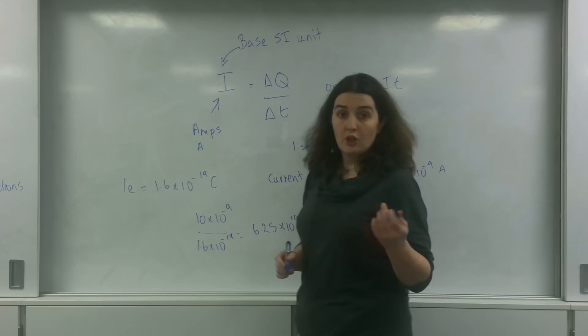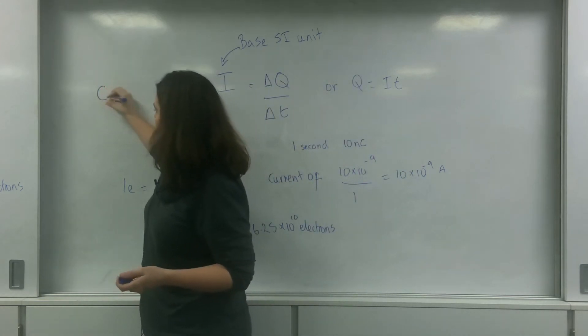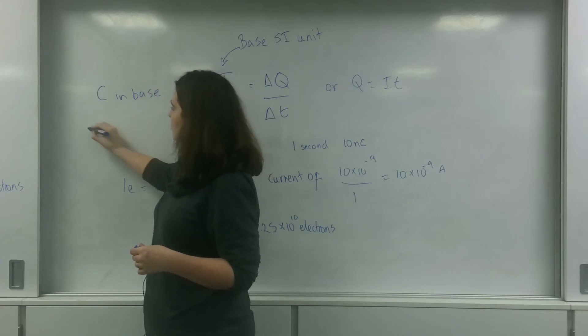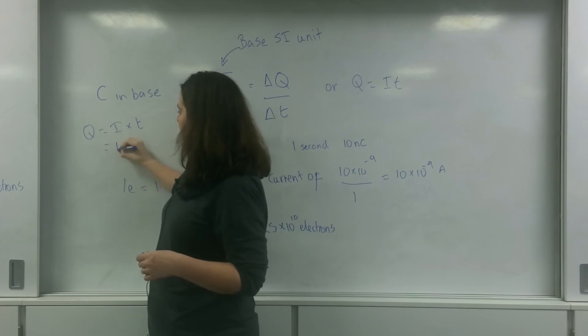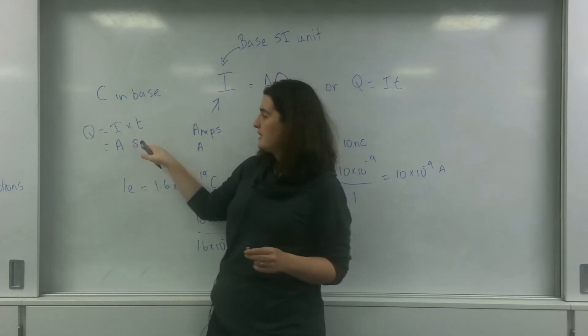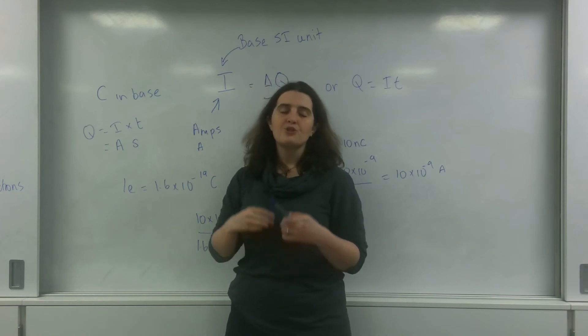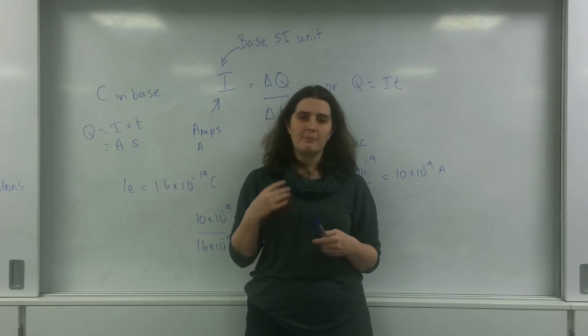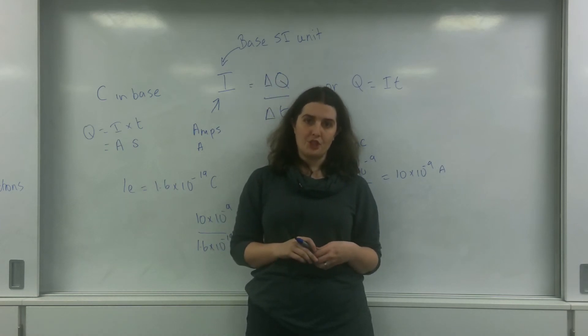So putting coulombs in base SI, since charge is I times T, that's amps times seconds. Amp seconds is the base SI units for charge. And that is current and charge.